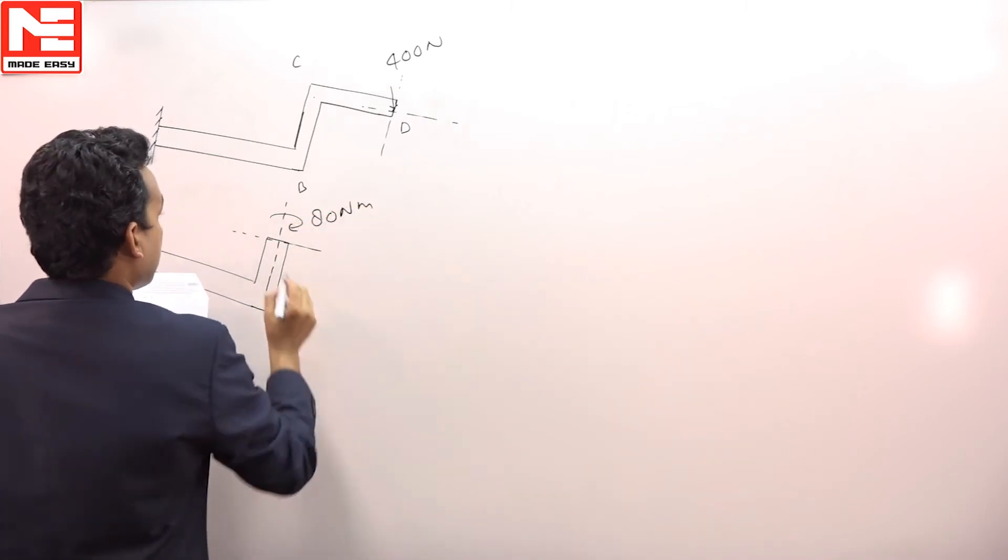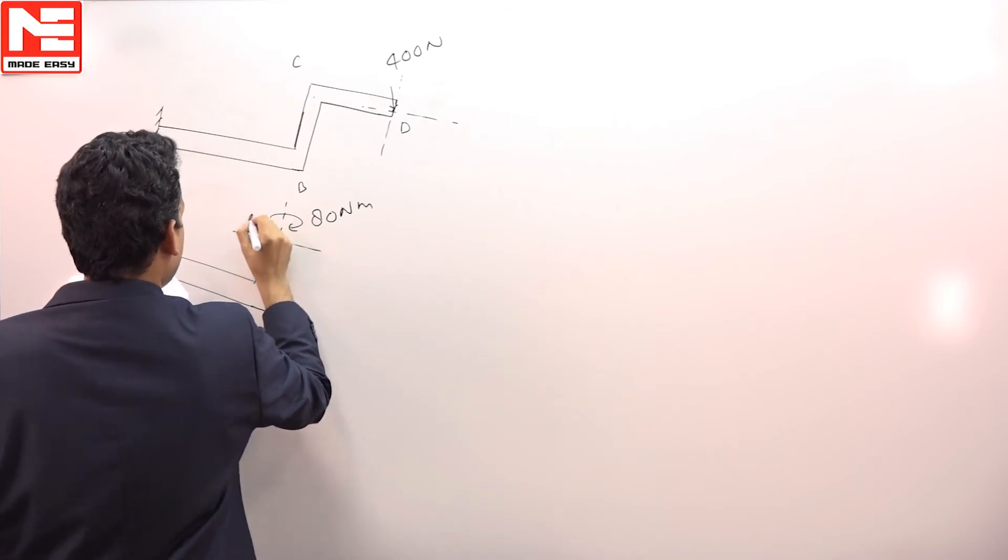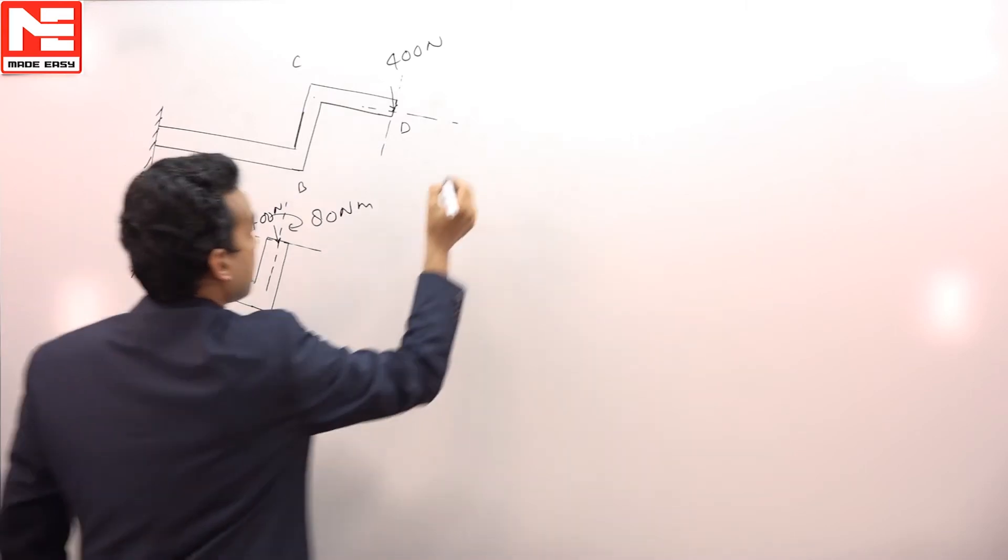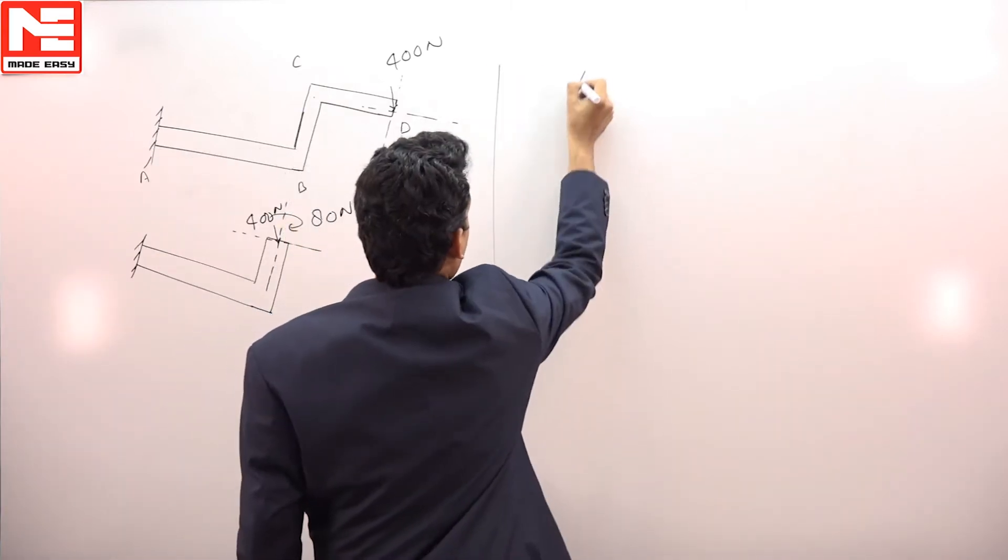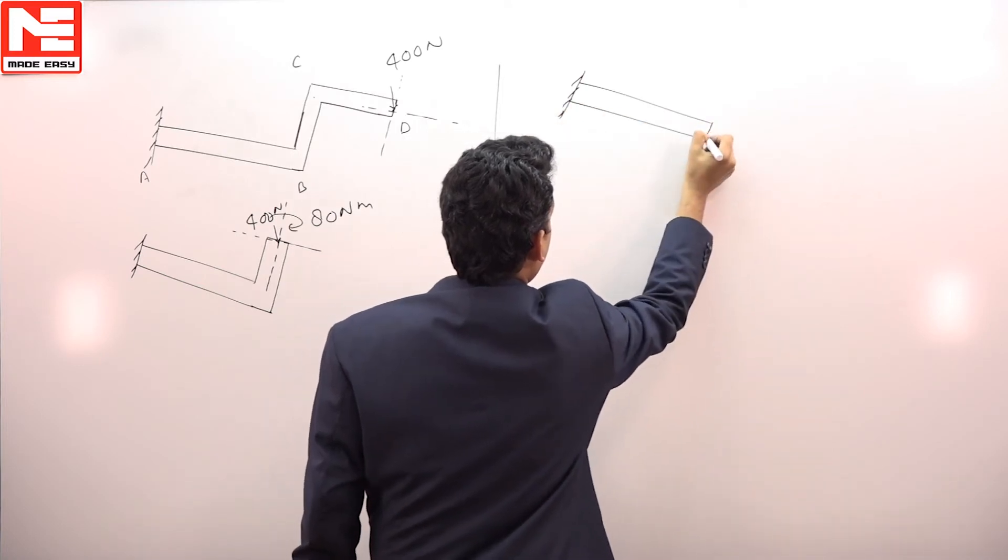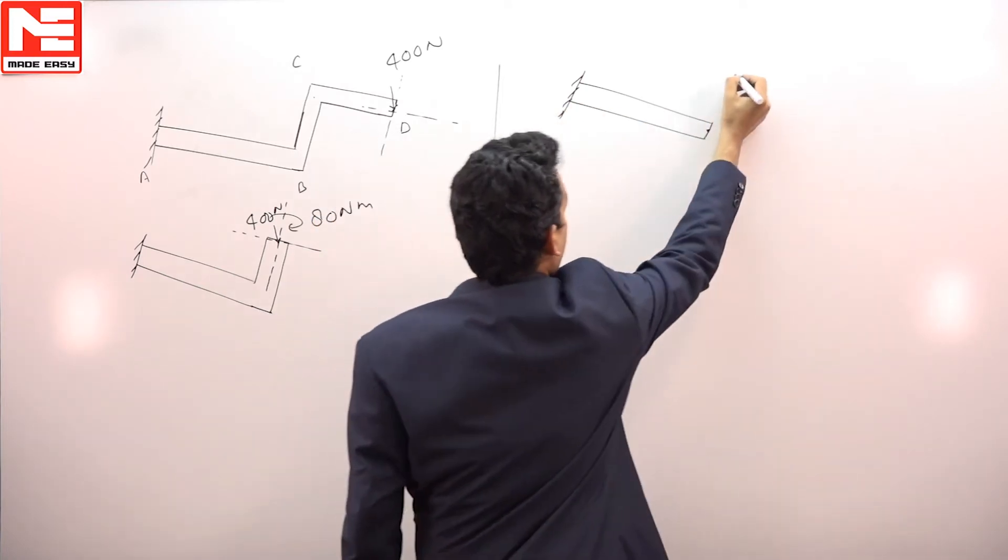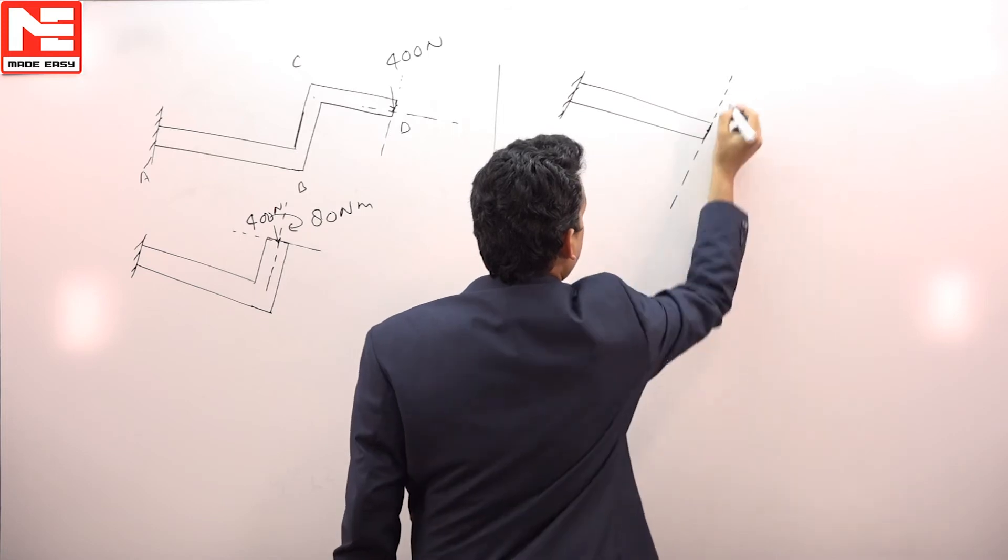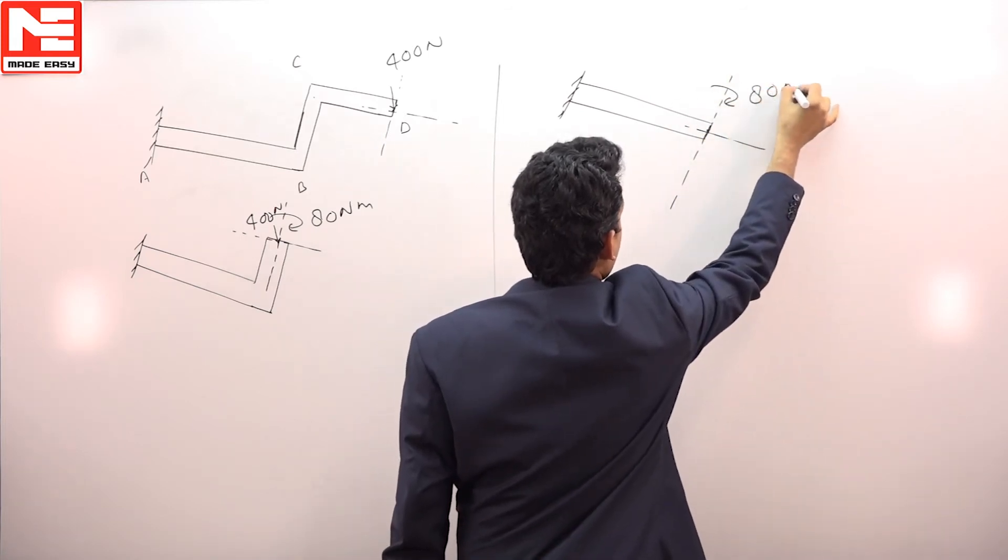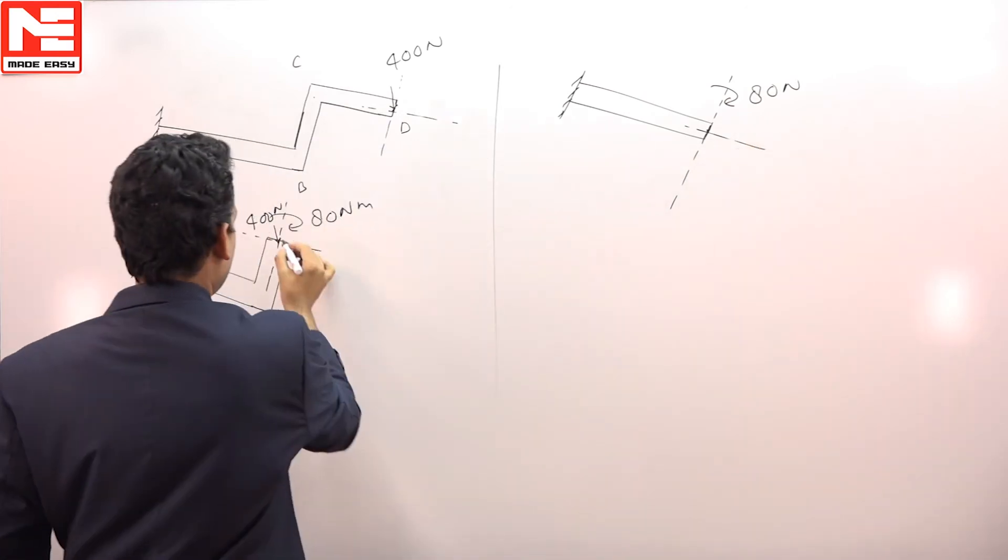Then we will have a force of 400 Newton again. If you shift this to at point B, we will get a couple of 80 Newton meter about this axis. Then if you shift this load from this point to this point, you will get a force perpendicular to this, that is 400 Newton.